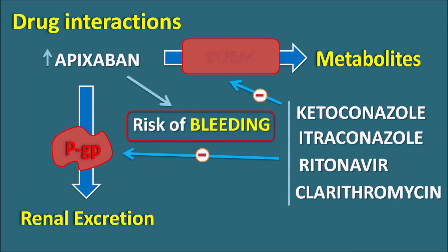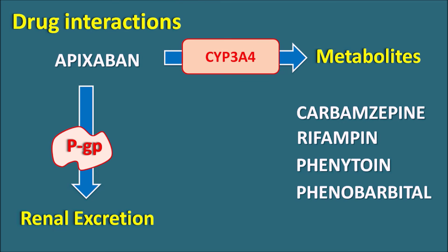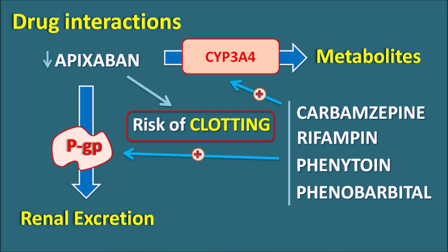Whenever these drugs are co-administered, the dose of apixaban should be reduced to lower the risk of bleeding. Similarly, drugs like carbamazepine, rifampicin, phenytoin, and phenobarbital are metabolic enzyme inducers — they induce CYP3A4 and P-glycoprotein, reducing serum levels of apixaban. In such situations there will be treatment failure leading to increased risk of clot formation, so in the presence of these drugs apixaban should be avoided.